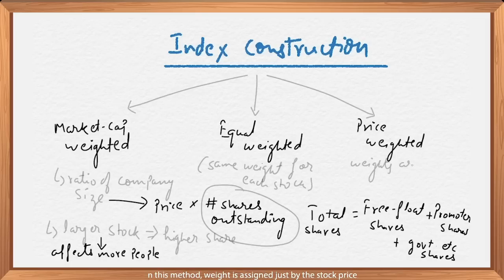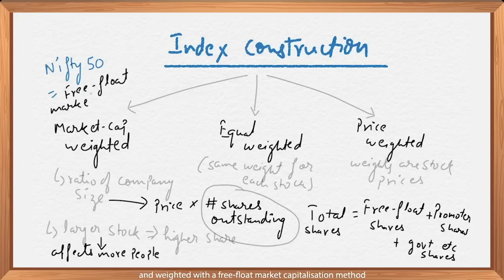Third, price weighted. In this method, weight is assigned just by the stock price. To give you an example, Nifty 50 comprises of 50 stocks selected across multiple sectors and weighted with the free float market capitalization method.